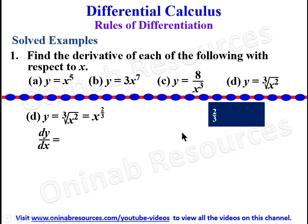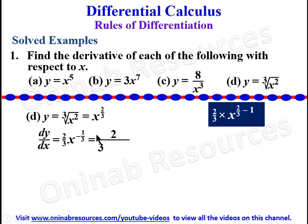So dy/dx will be the power 2/3 times x raised to power 2/3 minus 1. Now 2/3 minus 1 gives negative 1/3, so we have x raised to power negative 1/3. We can write this as a fraction: 2/3 over the cube root of x. The negative power places x in the denominator as the cube root. That is the derivative of y = cube root of x squared.